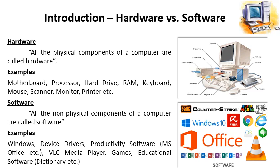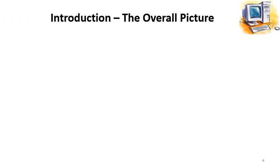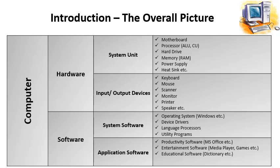The only difference between hardware and software is that hardware are the physical components and software are the non-physical components of the computer system. A computer consists of two main components: hardware and software. These are essential, because without hardware a computer cannot exist, and without software a computer is a dead device which cannot perform any function. So hardware and software are both mandatory components of a computer system.